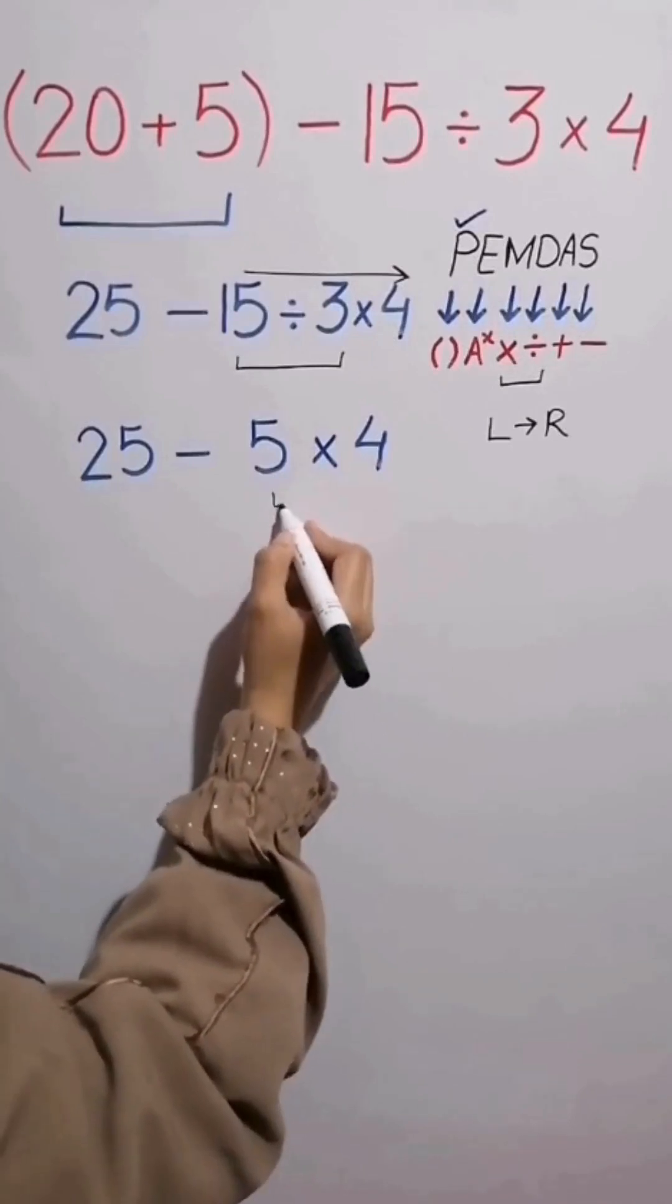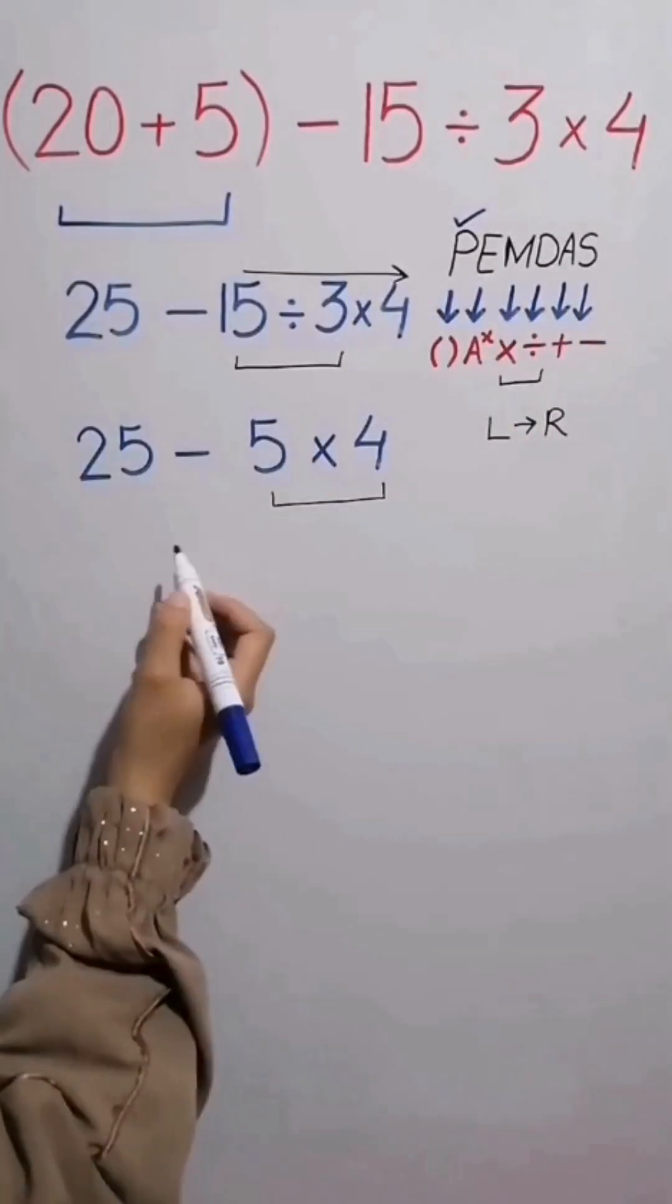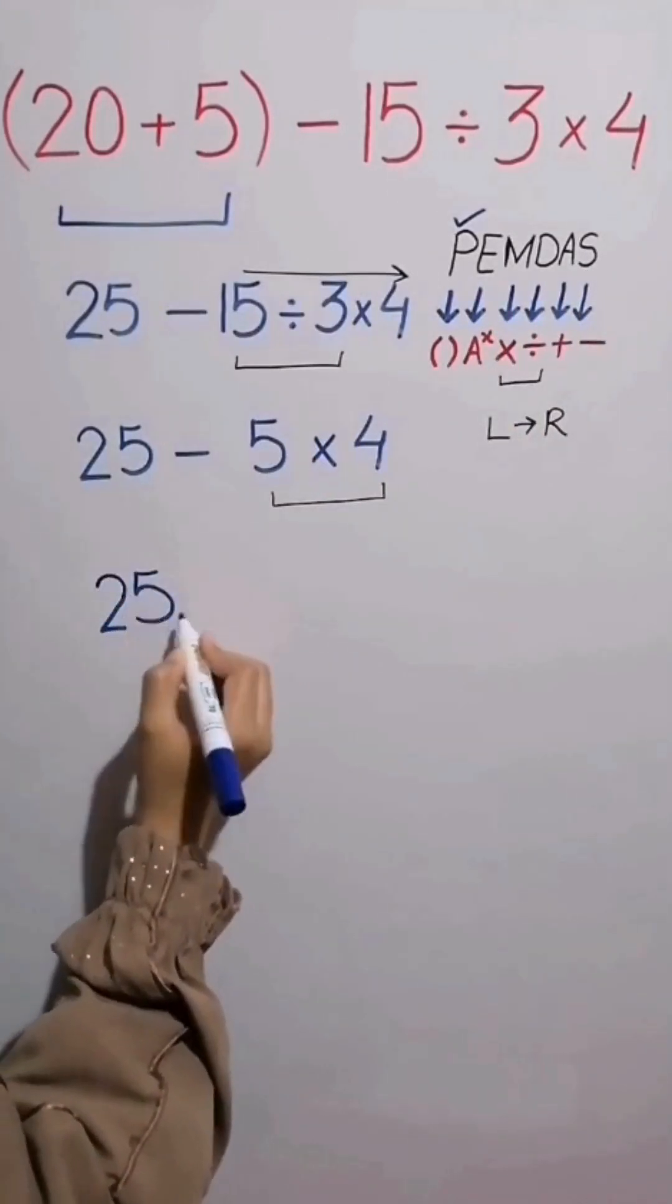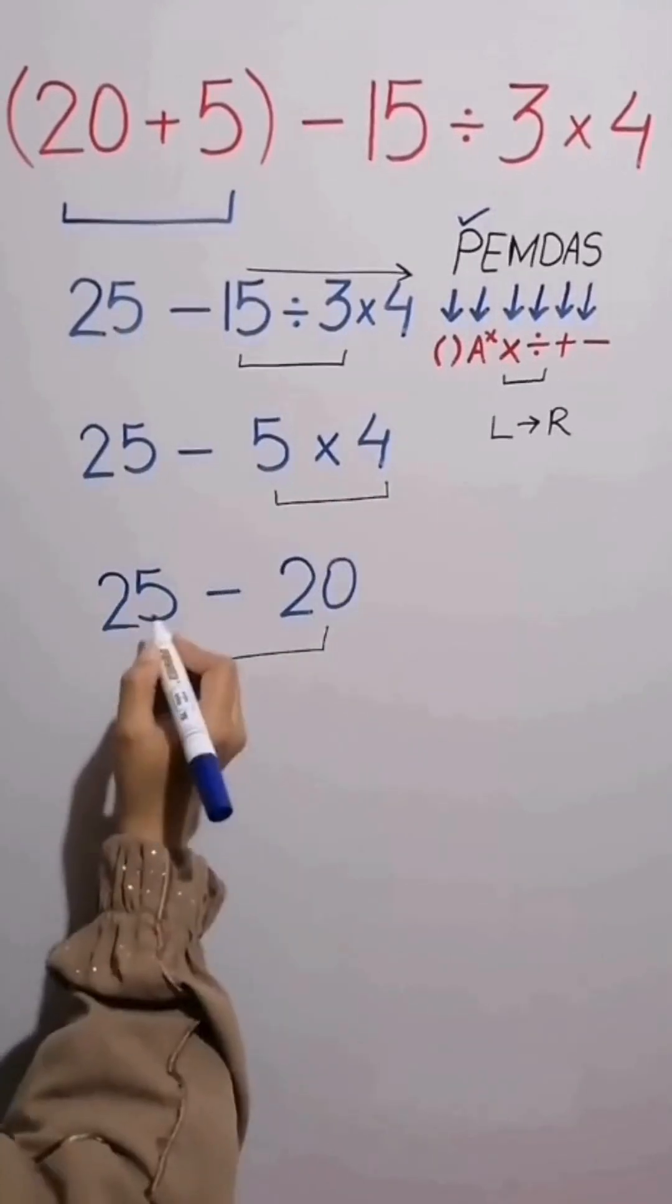In the next step we handle the multiplication between 5 and 4 because multiplication has a higher priority than subtraction. And this expression simplifies to 25 minus, 5 times 4 equals 20, which ultimately gives us the answer 5.